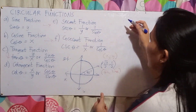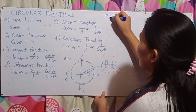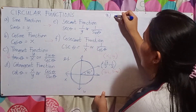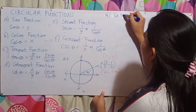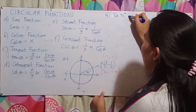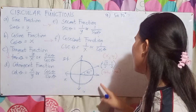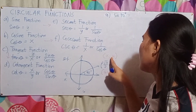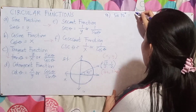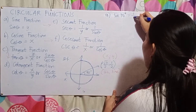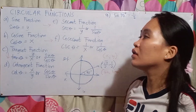Solution for letter A: sine 30 degrees. Since sine equals y, and the value of y is 1/2, the answer is automatically 1/2. You can also solve it using a calculator.